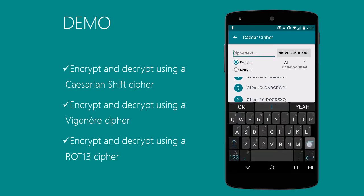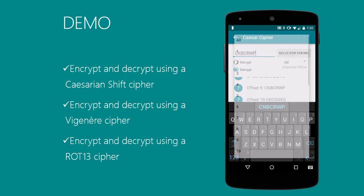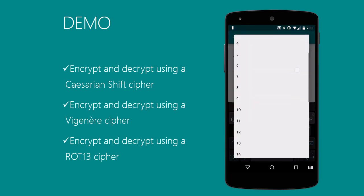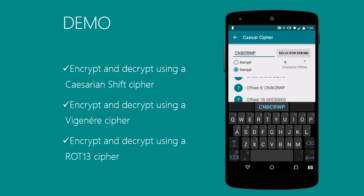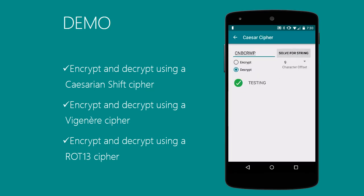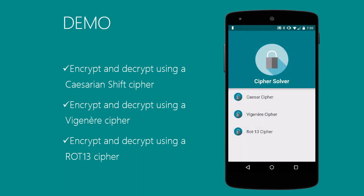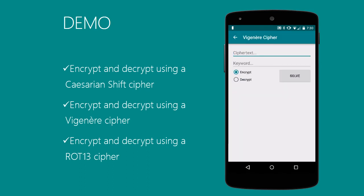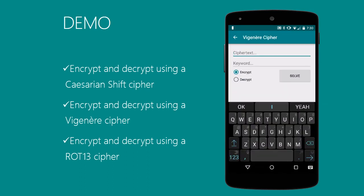Say I selected offset 9 — I can go paste that result up there and decrypt using character offset 9, and it will spit back my original text. So that's an example of the Caesar cipher working.